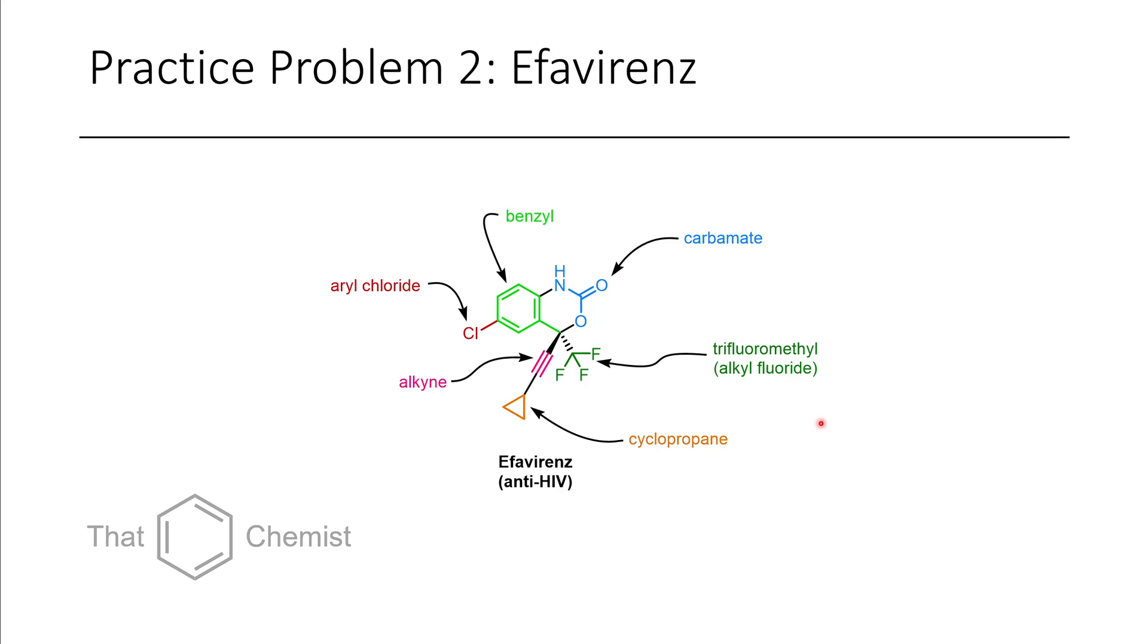Now, in problem two, we have efavirenz, which is one of many anti-HIV drugs developed in a campaign for antiviral drugs. Here we have an alkyne. This three-membered ring is called a cyclopropane. These are quite common motifs in drugs, as well as organic synthesis more broadly. Here we have this trifluoromethyl group, which is also an alkyl fluoride, which is connected to this carbamate right here. This aryl chloride is also a common motif in these types of drugs. We also have a benzyl group right here.